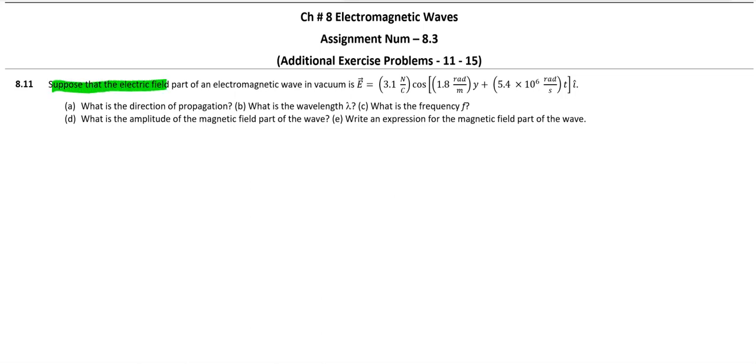Suppose that the electric field part of an electromagnetic wave in vacuum is given as E equals 3.1 Newton per Coulomb cos 1.8 radian per meter y plus 5.4 into 10 raised to 6 radian per second t in icap direction.